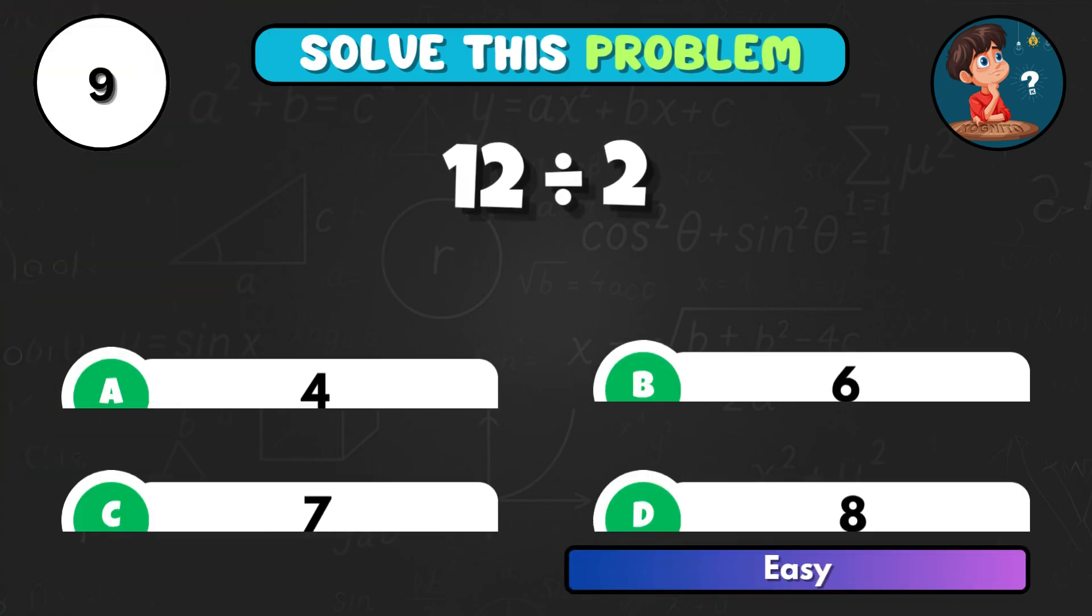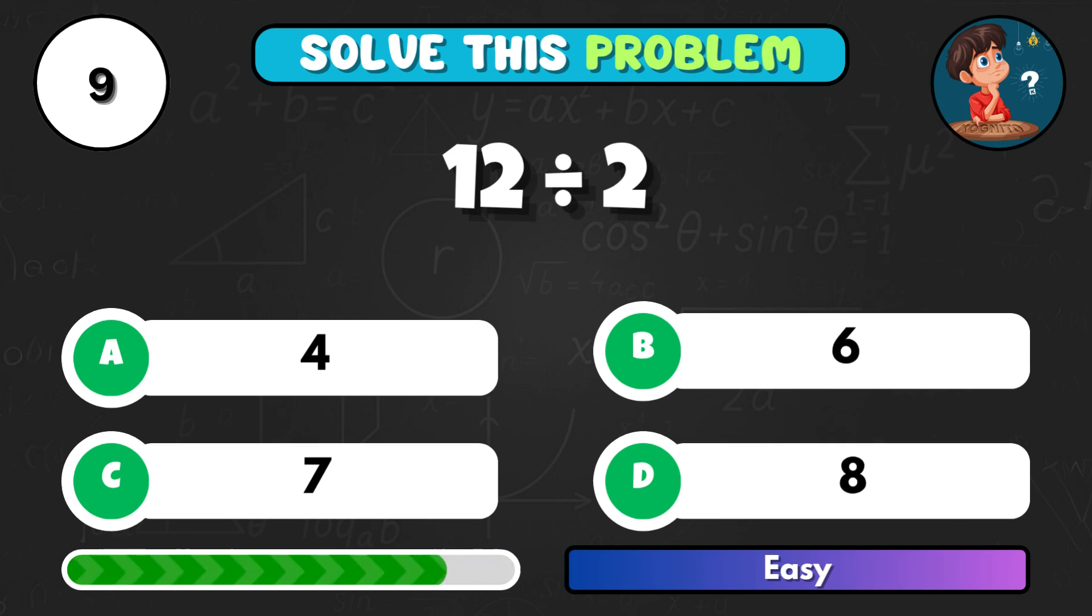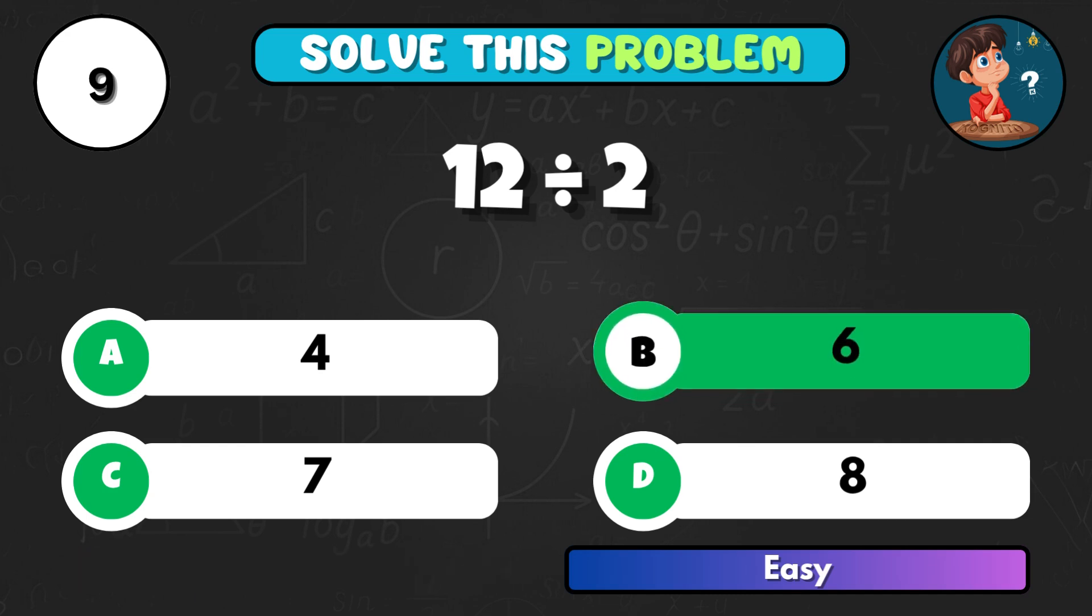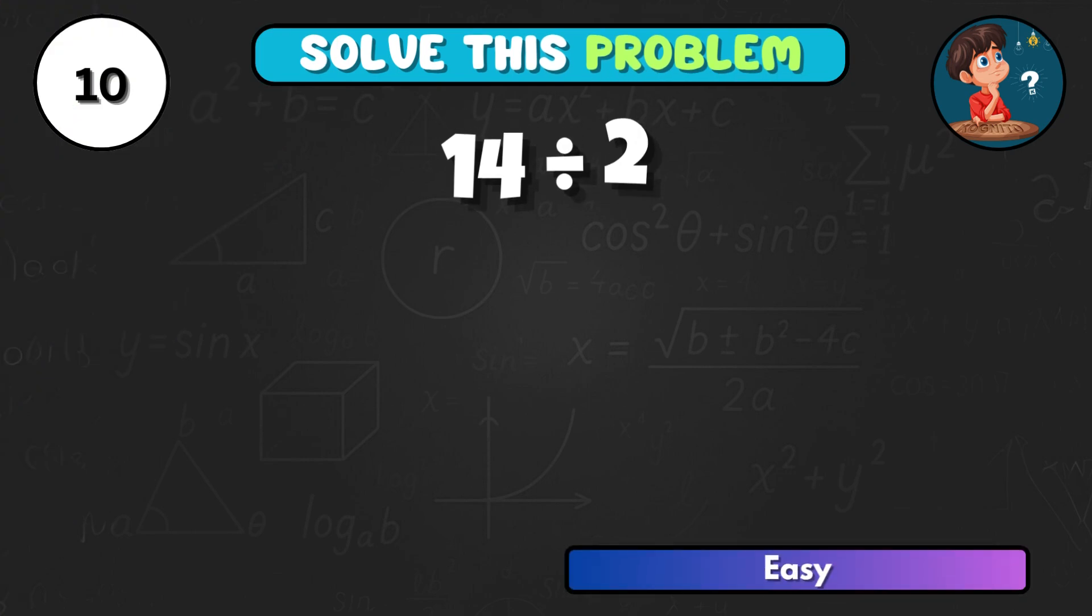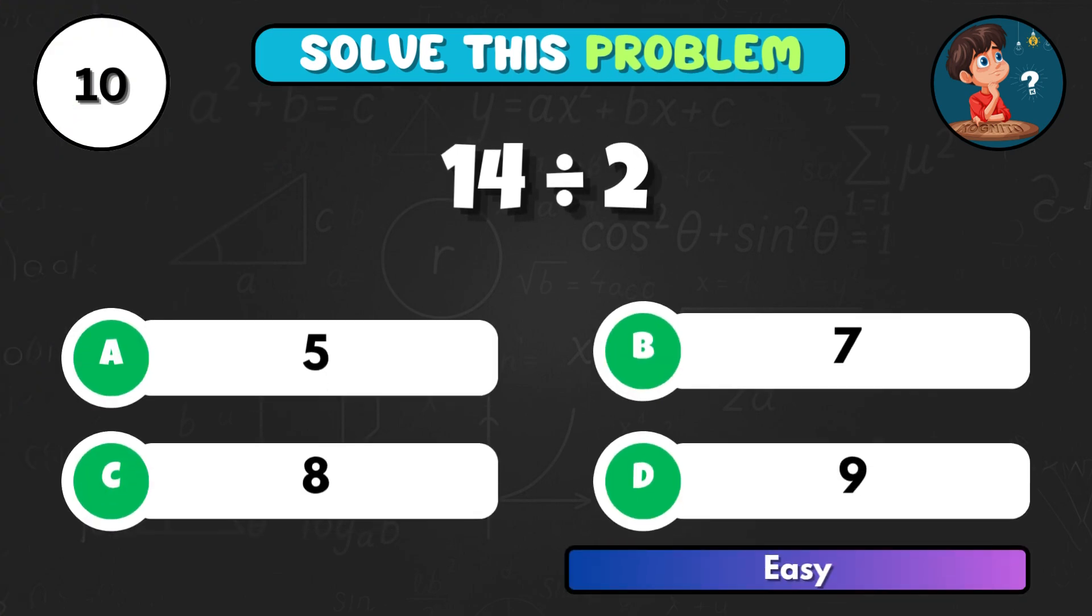Divide 12 by 2, what's your result? That's B equals 6. Try 14 divided by 2, what do you get? Option B equals 7.